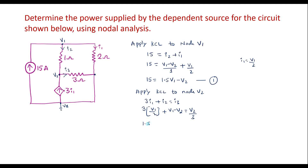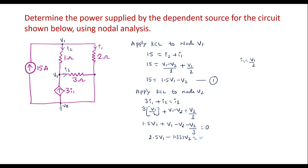Simplifying the KCL equation at V2: 1.5·V1 + V1 − V2 = V2/3, which gives 2.5·V1 − 1.333·V2 = 0. This is Equation 2.